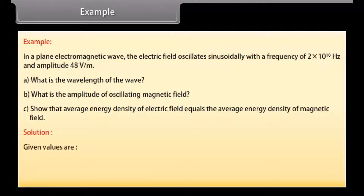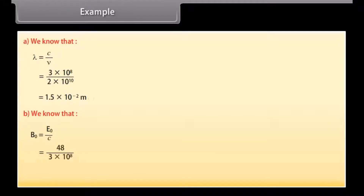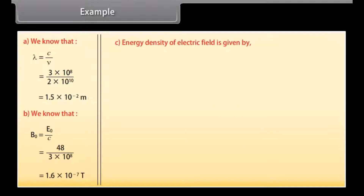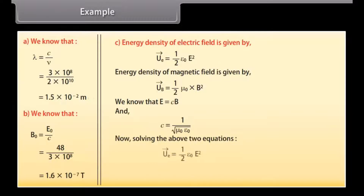Given: nu = 2 × 10^10 Hz, E naught = 48 V/m. We know lambda = c/nu; calculating gives wavelength = 1.5 × 10^-2 m. We know B naught = E naught/c; calculating gives amplitude of the magnetic field = 1.6 × 10^-7 Tesla. Energy density of electric field is half epsilon naught E squared; energy density of magnetic field is half mu naught B squared. Using E = cB and c = 1/sqrt(mu naught epsilon naught), solving gives average energy density of electric field equals average energy density of magnetic field.